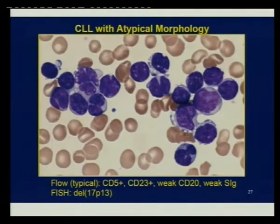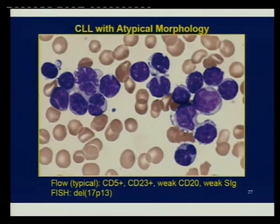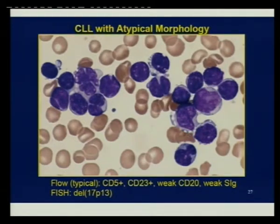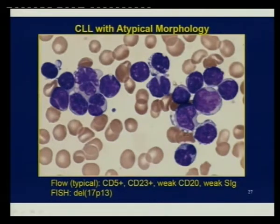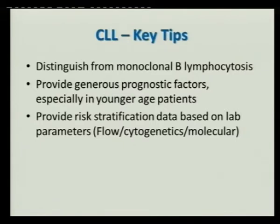Sometimes a case looks like CLL by phenotype but has atypical morphology; you'd call it atypical CLL, which is associated with poorer outcome and some correlation with TP53 deletion. These cells don't look like CLL at all — the typical CLL cells may be only one or two, and others are very difficult to categorize. In summary, the key things are distinguishing CLL from MBL, and providing prognosis not just diagnosis.